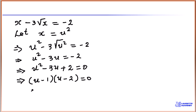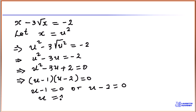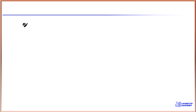So we have u minus 1 equals 0 or u minus 2 equals 0. Adding 1 to both sides gives u equals 1, and adding 2 to both sides gives u equals 2. We have two values of u, but we set out to look for x. We made the substitution that x is equal to u squared.